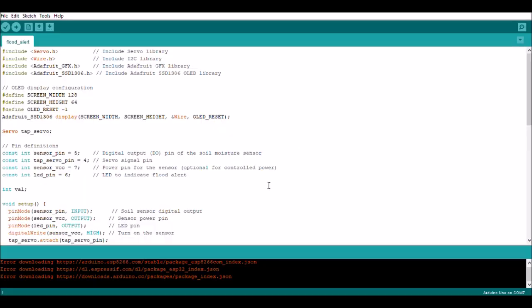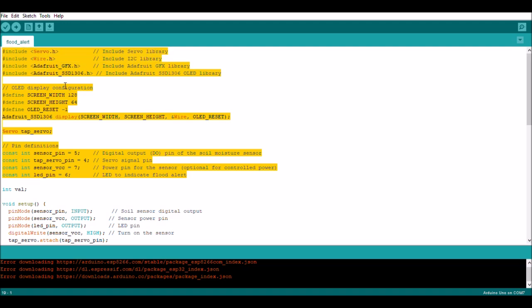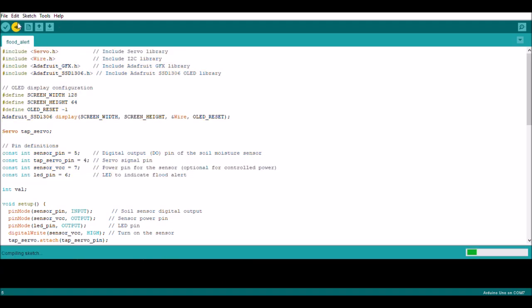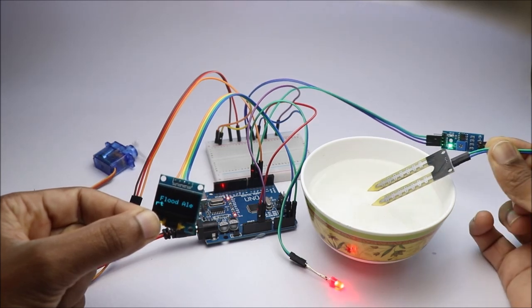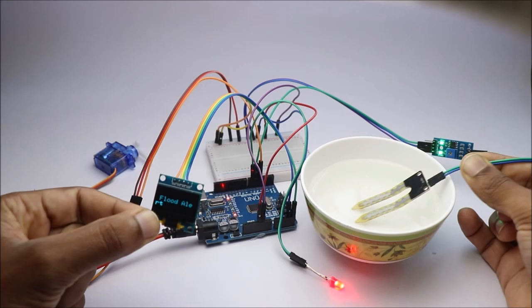After the connections are complete, upload the program using Arduino IDE. You can check the description box below for codes. Now finally, you can test the circuit by immersing the sensor in water.